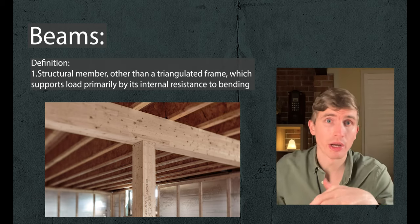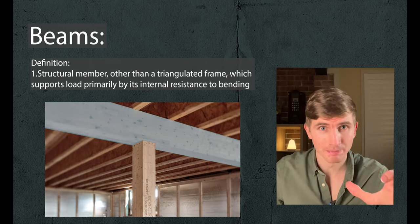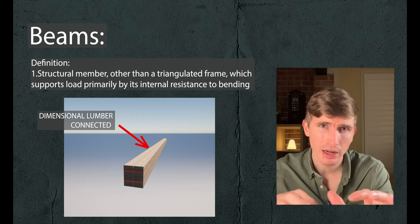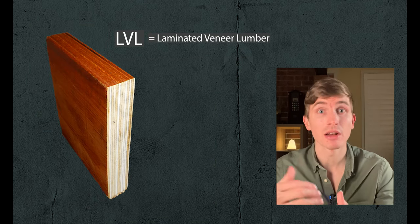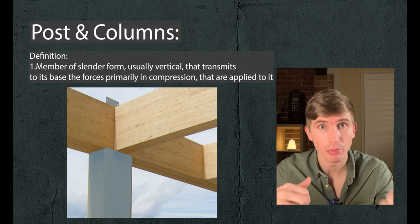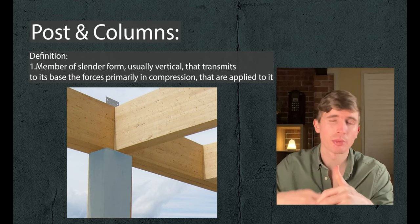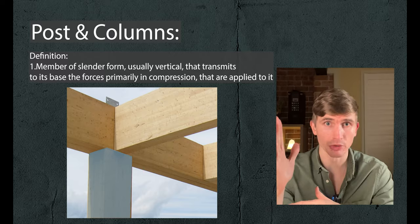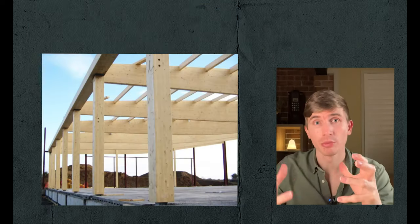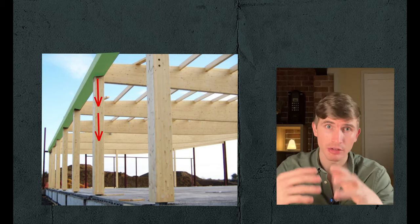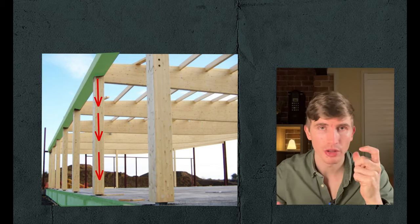Joists are also supported by another horizontal member known as a beam. Beams are sometimes made of dimensional lumber grouped together, or more commonly they're made out of LVLs — Laminated Veneer Lumber. Beams also need something to sit on for support: sometimes they rest on masonry piers, other times they rest on top of posts and columns. Posts and columns are pretty much a catch-all term for vertical support — sometimes made of hollow steel, other times made of wood like the common patio post. Posts and columns transfer the weight from a beam down to somewhere lower in the foundation or another support.